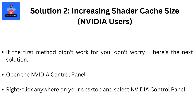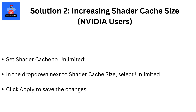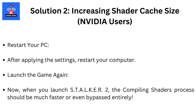Solution 2: Increasing shader cache size for NVIDIA users. If the first method didn't work for you, don't worry — here's the next solution. Right-click anywhere on your desktop and select NVIDIA Control Panel. In the control panel, click on Manage 3D Settings and scroll down until you find the shader cache size option. In the drop-down next to shader cache size, select unlimited, then click Apply to save the changes.